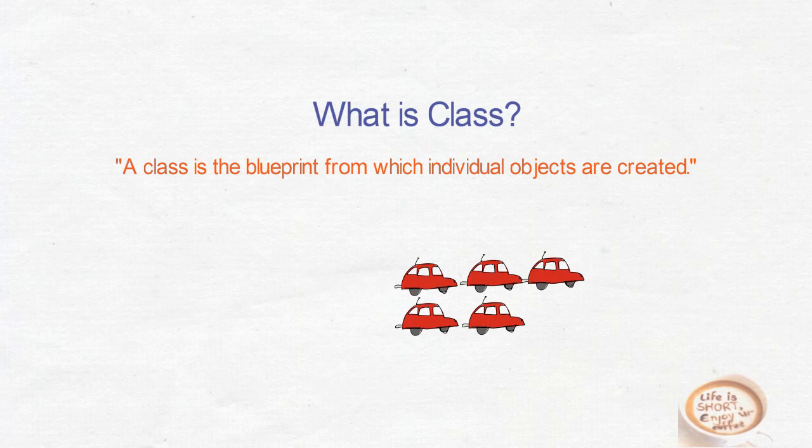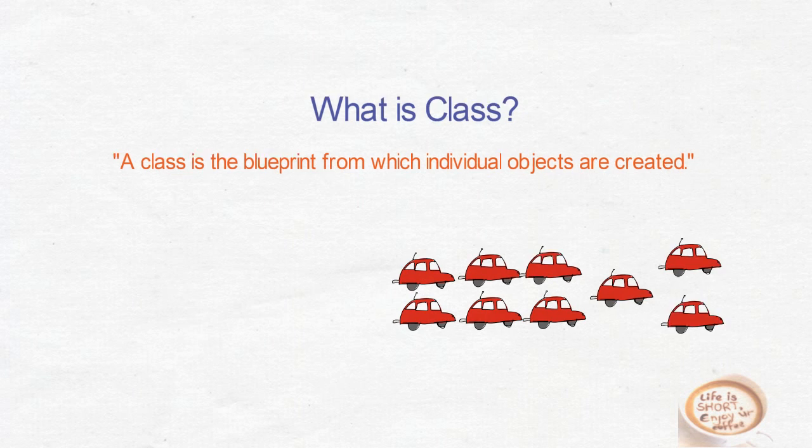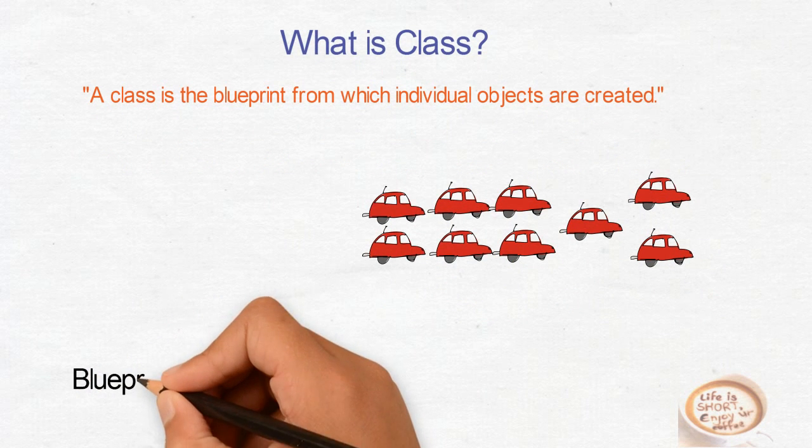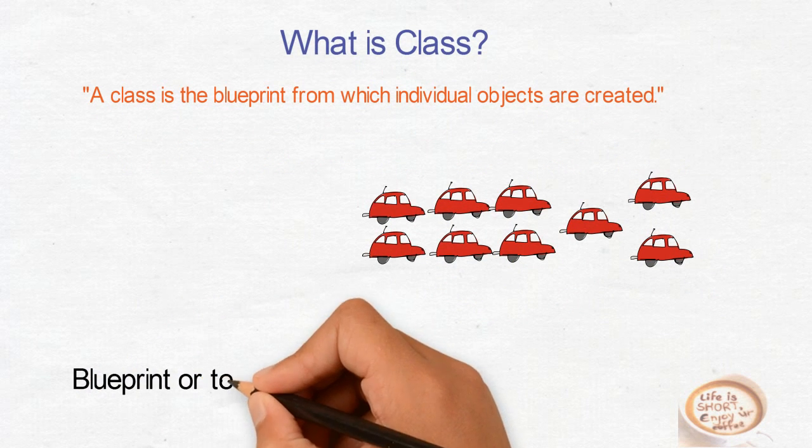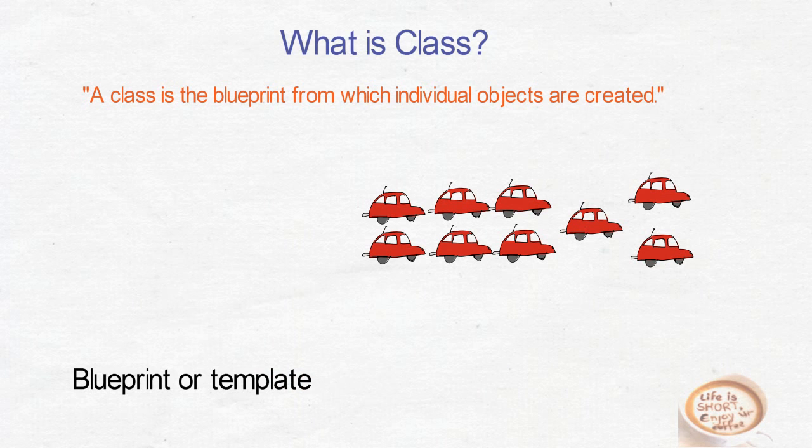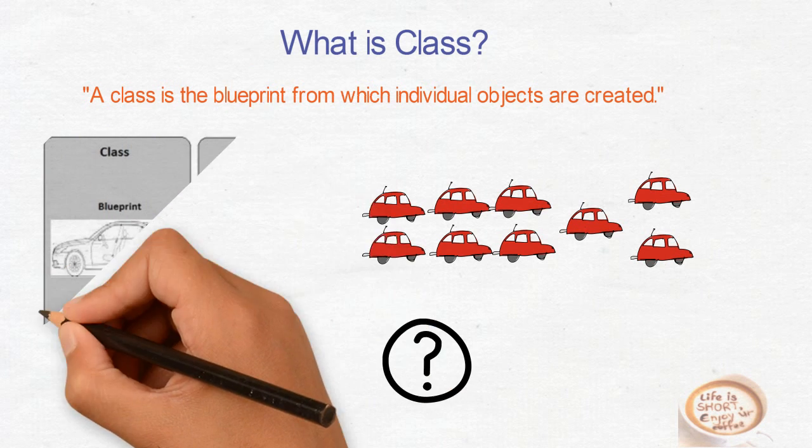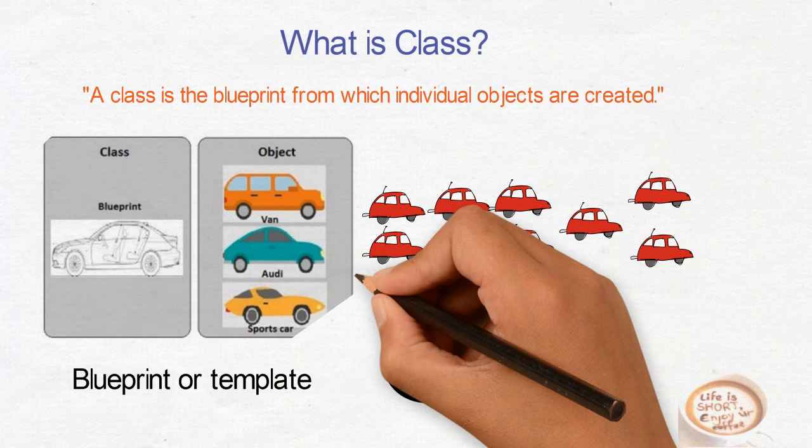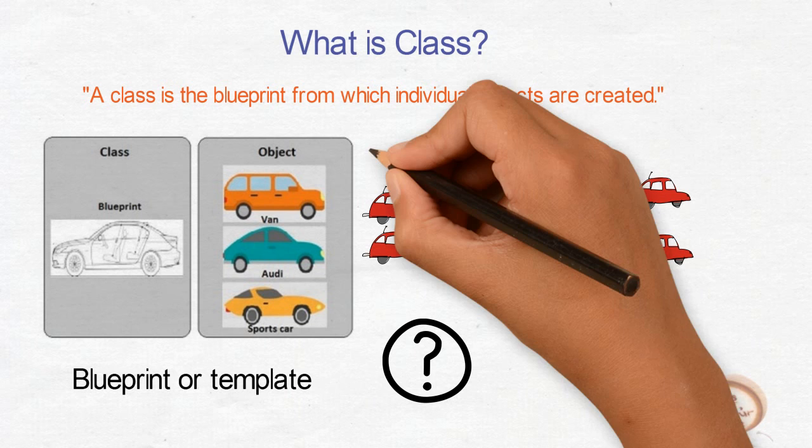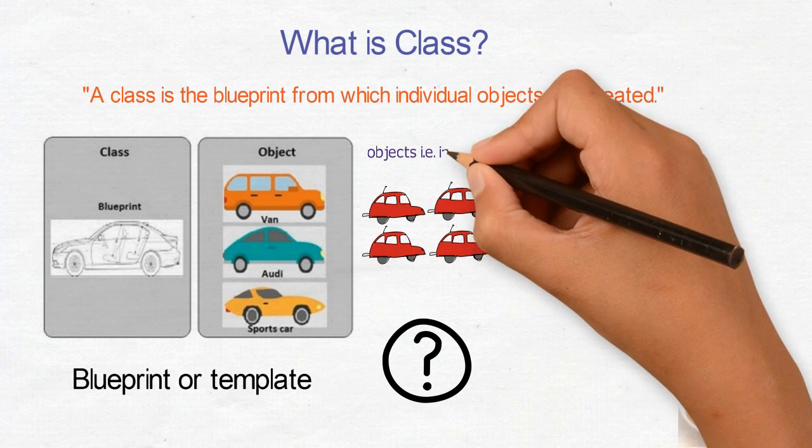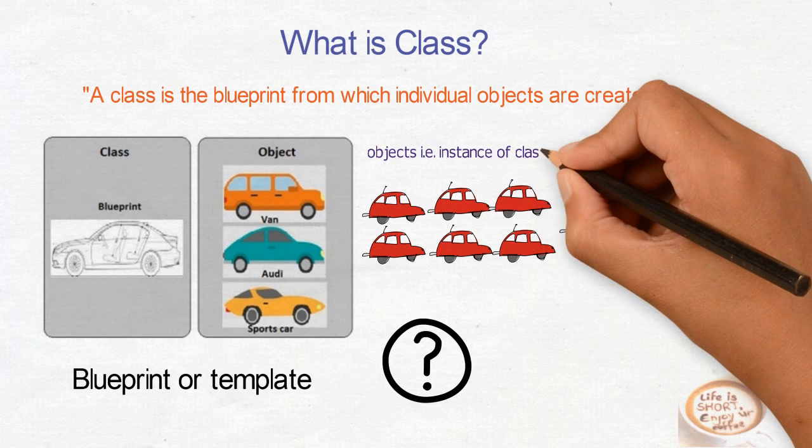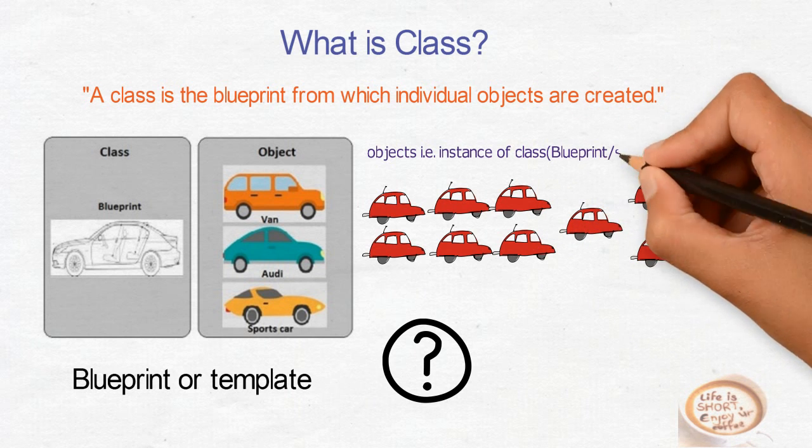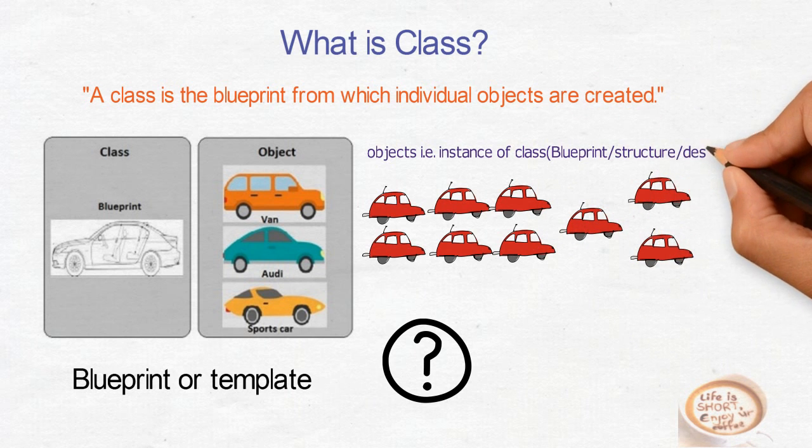So, what is class? When you want to create many objects, many car objects, we require some template or blueprint. So what is this blueprint and template look like? Just look at this picture. What is blueprint? It's a class. It's a concept or it is a design, or we can say it is a structure using which we can create multiple objects. So we call it blueprint or template here.